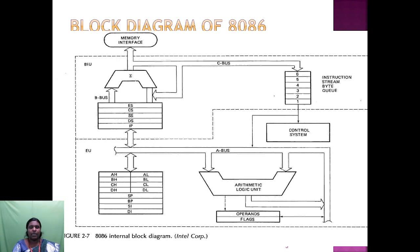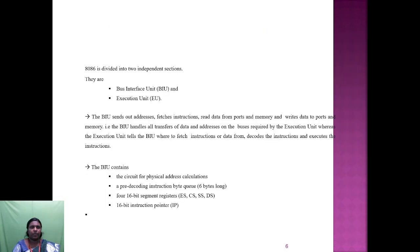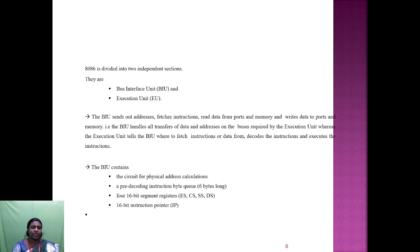If you want to check other results, we use the flags. The 8086 is divided into two independent sections: the Bus Interface Unit and the Execution Unit. The BIU sends out addresses, fetches instructions, reads data from ports and memory, and writes data to ports and memory — it handles all transfers of data and addresses on the bus required by the EU. The Execution Unit tells the BIU where to fetch the instruction or data from, decodes the instruction, and executes it.